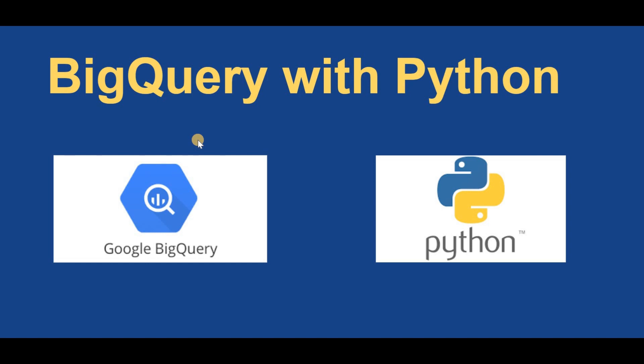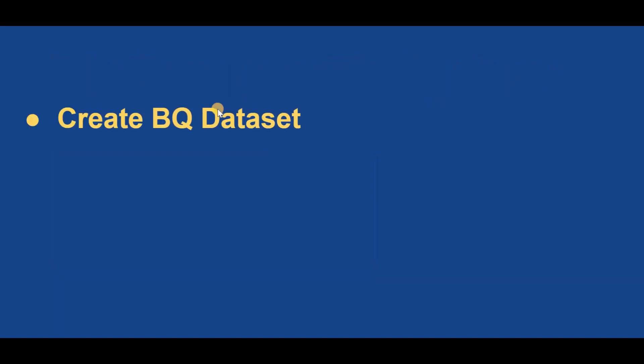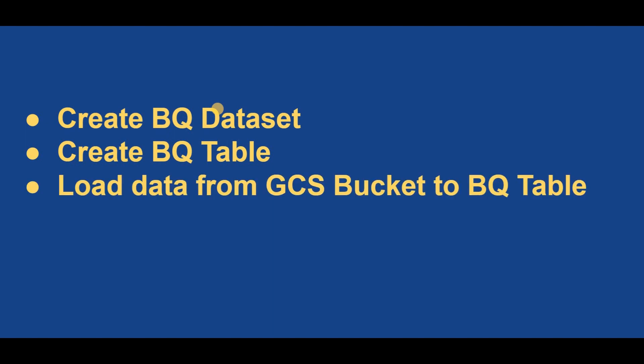In this video we are going to see very simple operations in BigQuery. We'll see how we can create a BigQuery dataset using Python, how we can create a BigQuery table using Python, and then how we can load a CSV file from our GCS bucket to the BigQuery table using Python. We are not using any GCP service — we are only using a GCS bucket and a CSV file from GCS bucket and loading it into the BigQuery table using a Python script.